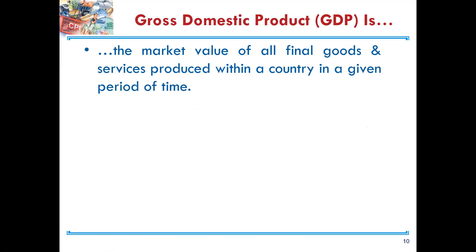So what is GDP in simple terms? Gross domestic product is the market value of all final goods and services produced within a country in a given period of time. Gross domestic product is the market value of all final goods and services produced within a country in a given period of time.